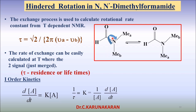As you increase the temperature, the two signals just merge. At that point, tau — the residence lifetime, the lifetime of methyl proton A in this state — equals square root of 2 divided by 2π(νA − νB), where νA and νB are the resonance frequencies of the two methyl protons.